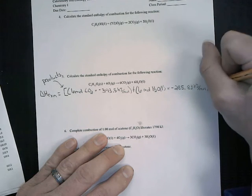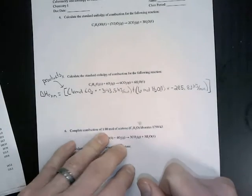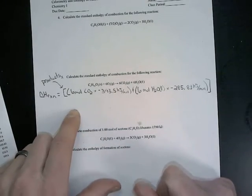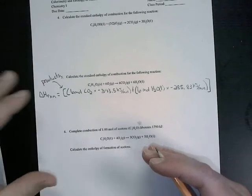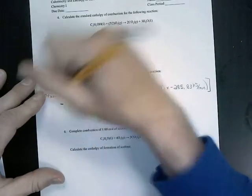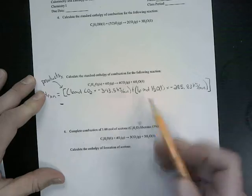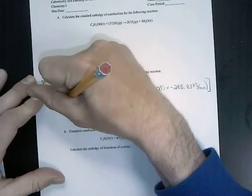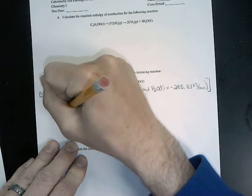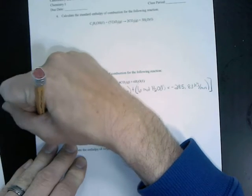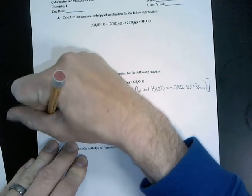Now we close the parenthesis and we close our bracket. Remember, key to thermodynamics is thinking about products minus reactants. So we're going to take all of this up above, and we're going to put it in our calculator, and we're going to subtract it from our reactants.